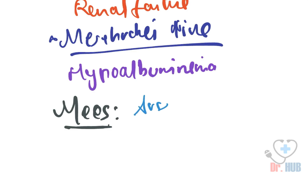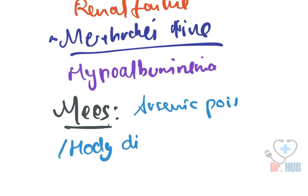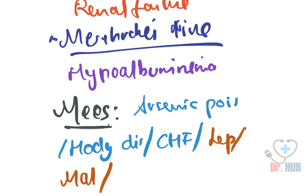Next we look at Mees' lines. Mees' lines signify arsenic poisoning, Hodgkin's disease, congestive heart failure (CHF), leprosy, malaria, chemotherapy, carbon monoxide poisoning, and other systemic insults.